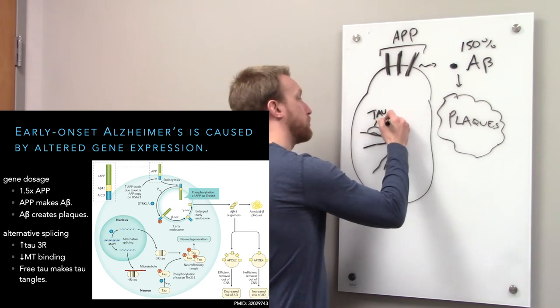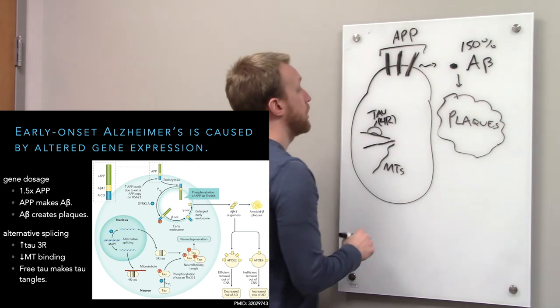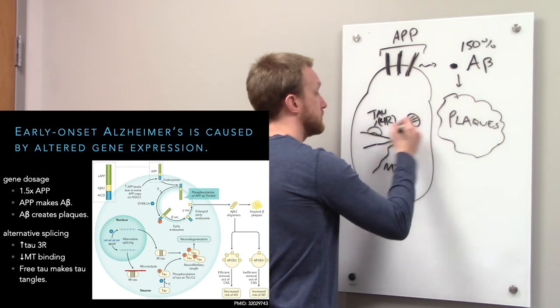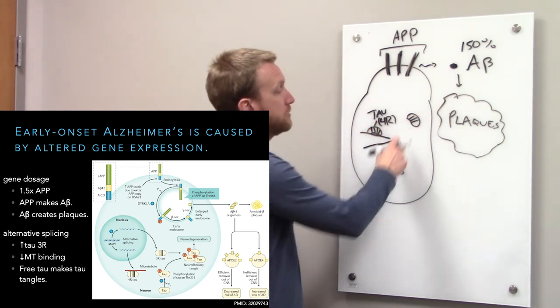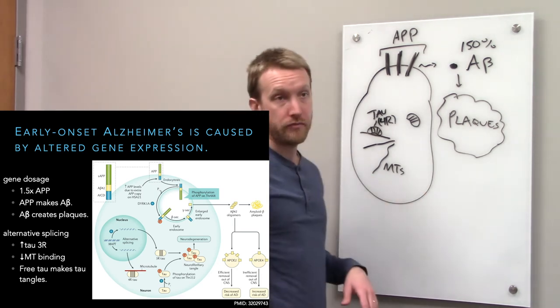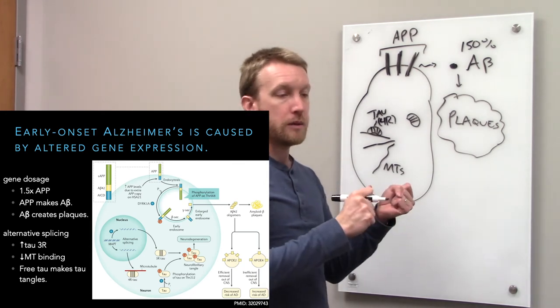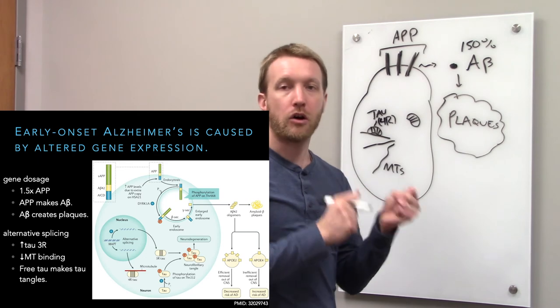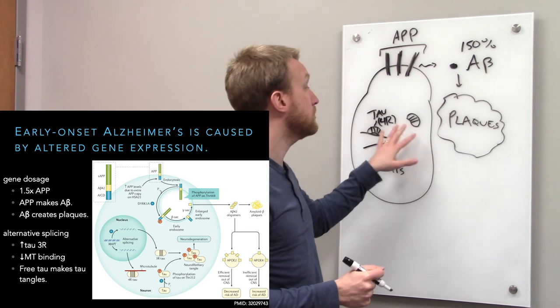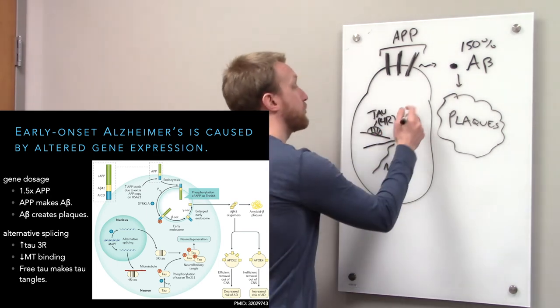If I have four repeats, I stick a whole lot better than the tau with only three repeats. These are my microtubule binding repeats. The more repeats, the better I stick. In Down syndrome, there's a change in the expression of this protein. It's an RNA processing protein. Even though tau isn't on chromosome 21, it still gets messed up because the RNA gets edited preferentially to form the three-repeat version.